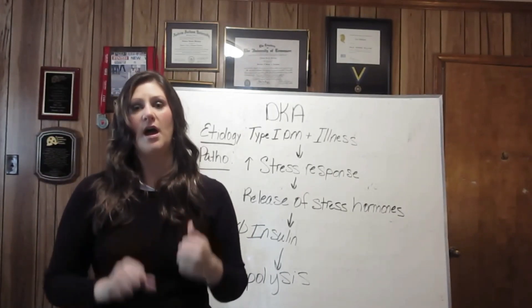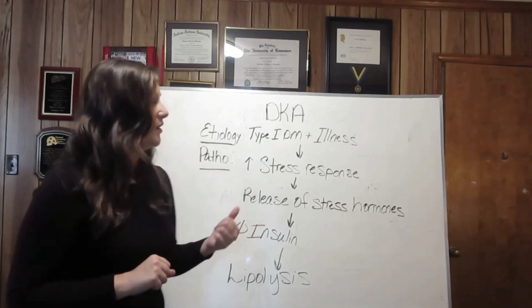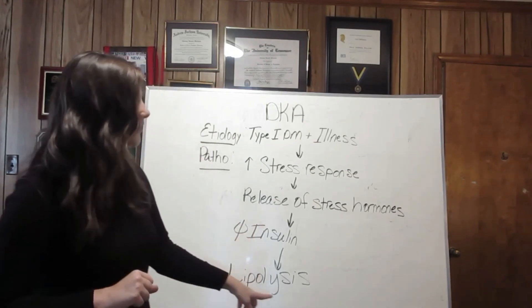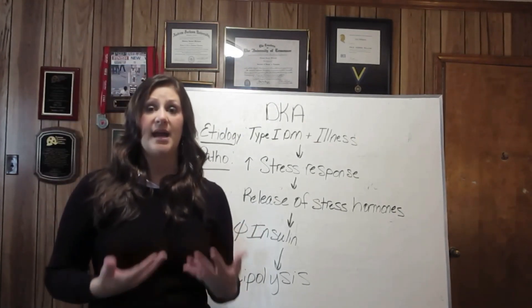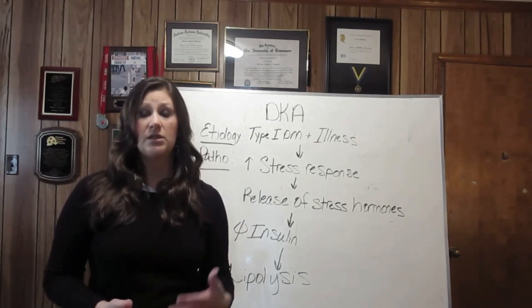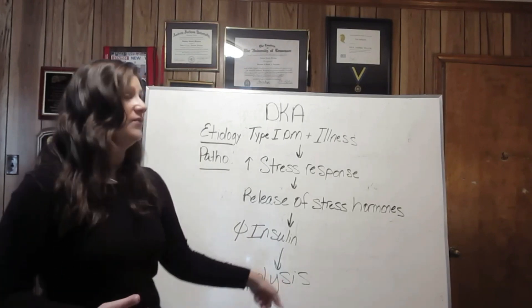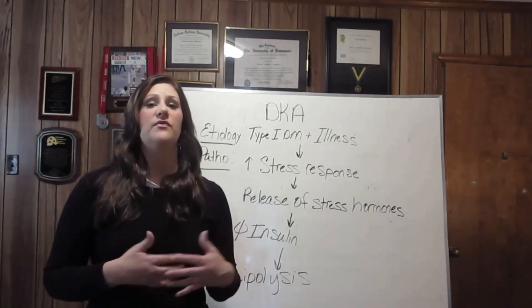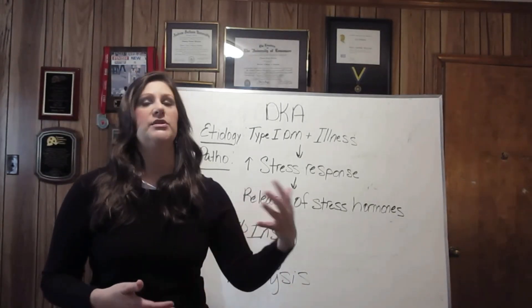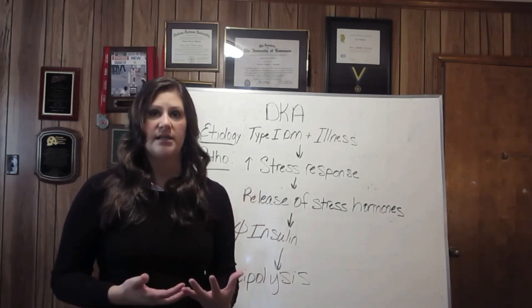Hyperglycemia leads to metabolic acidosis from the breakdown of fats into fatty acids and then keto acids. Metabolic acidosis causes a shift of potassium out of cells, leading to hyperkalemia. However, hypokalemia is what kills the vast majority of DKA patients.